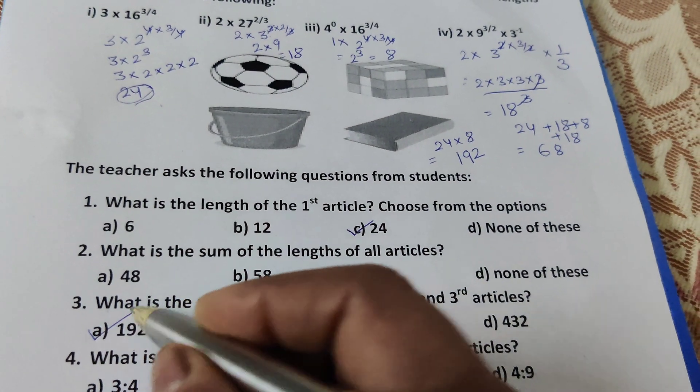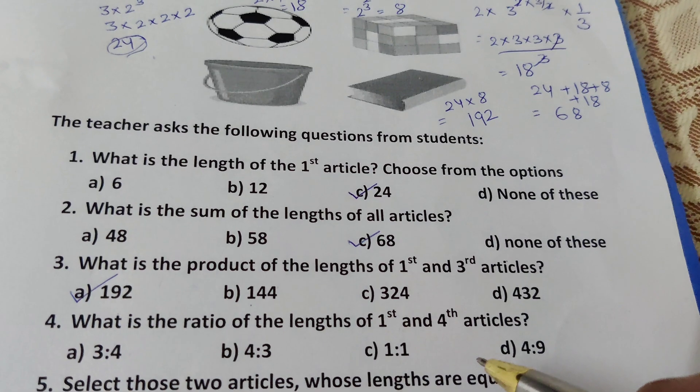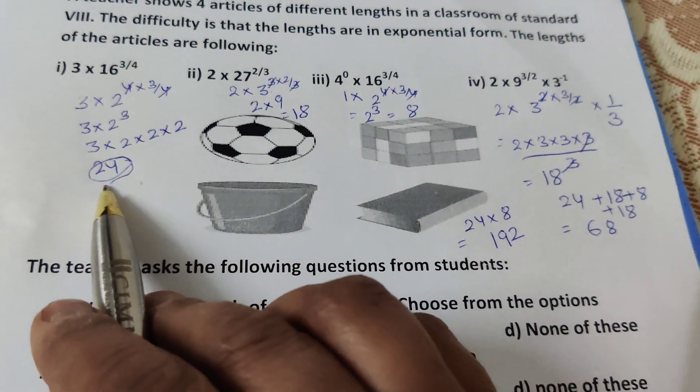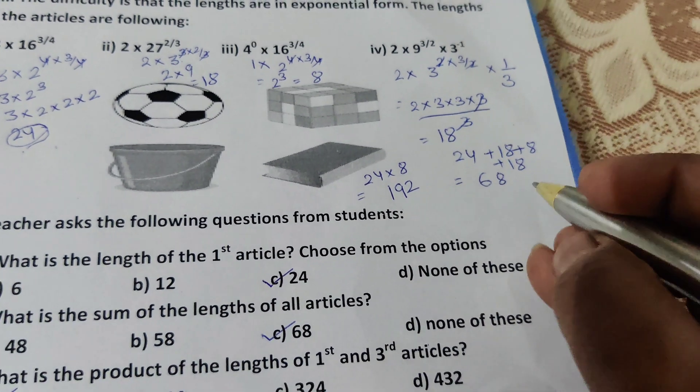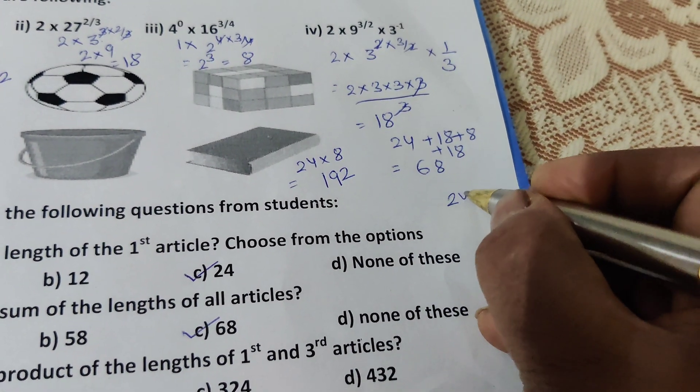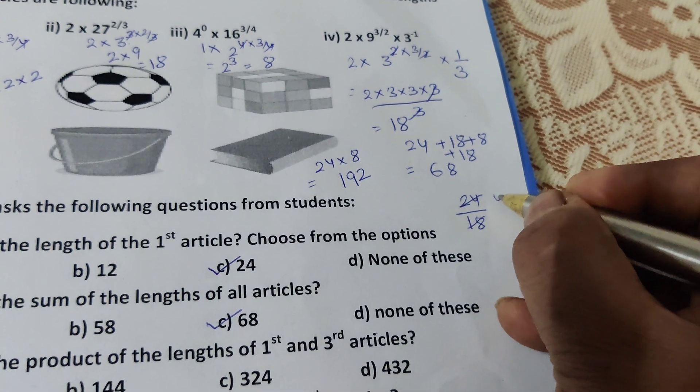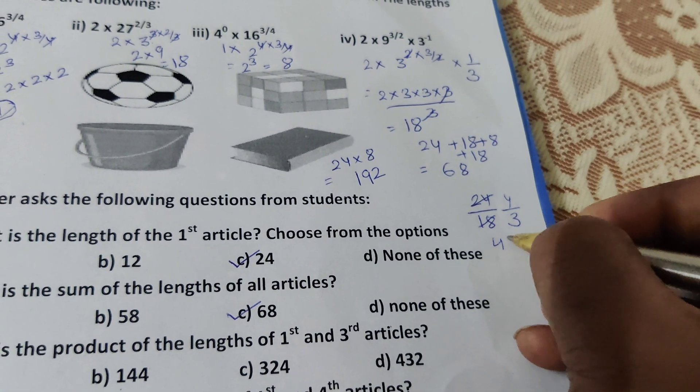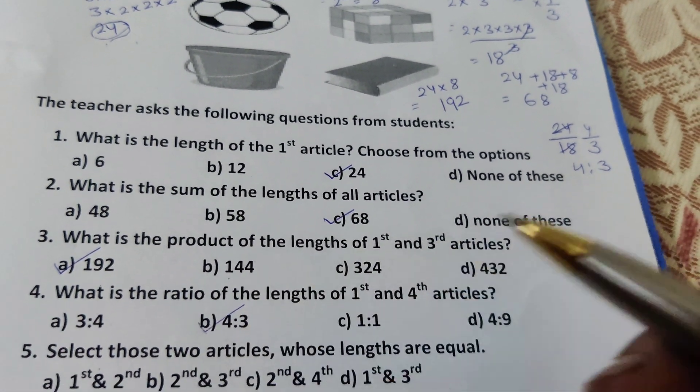What is the ratio of the length of first and fourth article? The first article is 24 and fourth is 18. The ratio, how can you find? First article 24, fourth 18. Now cancel by 6. The ratio is 4:3. The right option is 4:3.